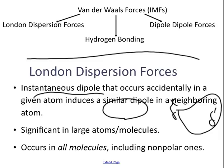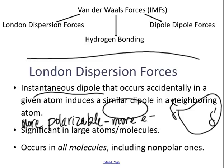These molecules continue to be in motion and continue to bump into each other. This is very significant in large atoms or molecules because large atoms or molecules have lots of electrons. Their clouds are more 'squishy.' The term I want you to use is polarizable. The more electrons you have, the more polarizable the cloud is, and you're going to have a stronger intermolecular force. Don't say 'bigger molecule = stronger force' — say 'more electrons means stronger intermolecular force.' If you want to look like a badass, say the cloud is more polarizable.